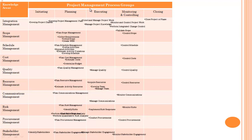Under process group executing, processes are: direct and manage project work, manage project knowledge; under quality — manage quality; under resource — acquire resources, develop team, manage team; under communication management — manage communications; under risk management — implement risk response; under procurement — conduct procurement; and under stakeholder management — manage stakeholder engagement.